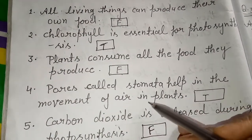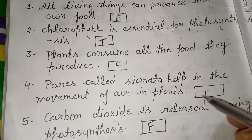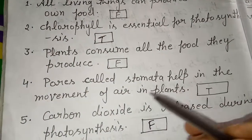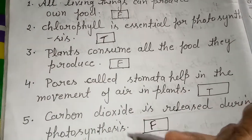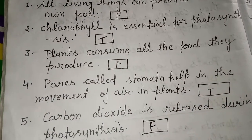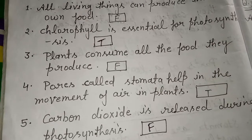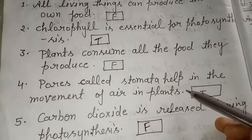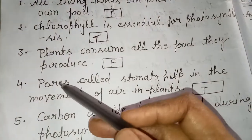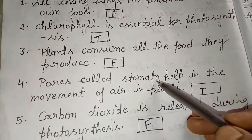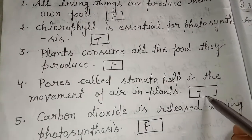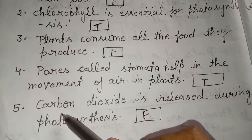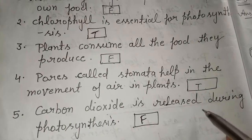Fourth question: pores called stomata help in the movement of air in plants. Yes, true. Oxygen is released through stomata and plants also take in carbon dioxide through these pores. So this is true.